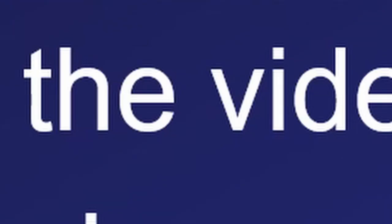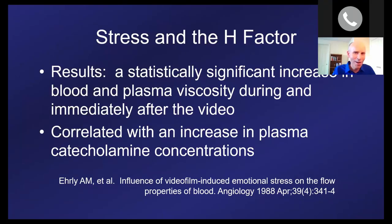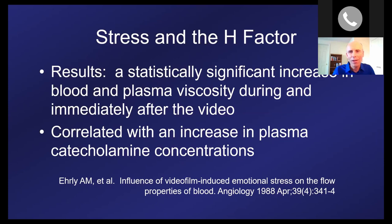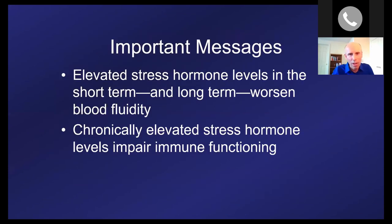Think about it: if a tiger jumped out of the bushes, I'd want my heart rate to go up, my blood pressure to go up, and my blood to be more coagulable. If I had to wrestle that tiger and sustained wounds, I'd want the bleeding to stop as quickly as possible. The problem is we trigger that fight-or-flight mode when we watch the news or drive in traffic. Elevated stress hormone levels, both short-term and long-term, worsen blood fluidity and chronically impair immune functioning.